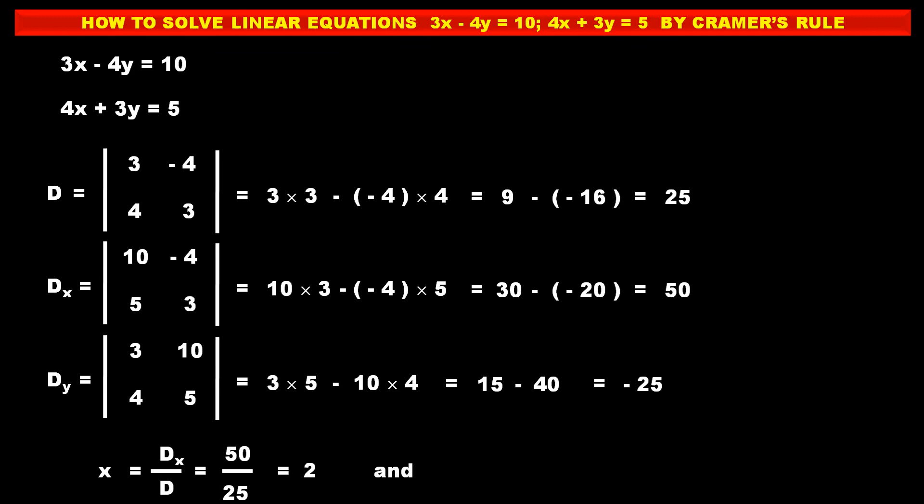Now we find the value of y. Its formula is Dy upon D. Substituting, y equals minus 25 upon 25, which gives us minus 1. So after solving these two equations by Cramer's rule, we get x equals 2 and y equals minus 1. Try solving this problem again in your notebook for better understanding.